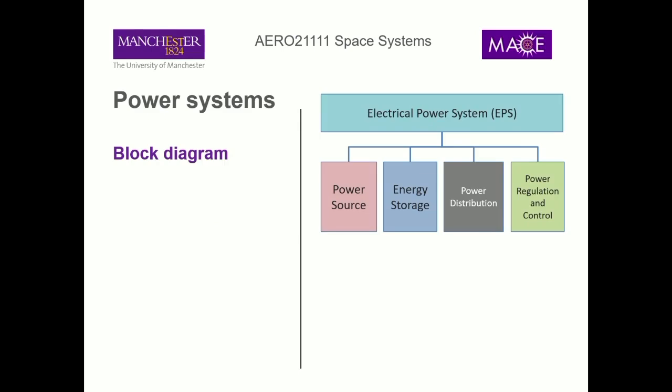This is a basic block diagram of what an electrical power system looks like. We've got four main blocks: a power source — some way to get power; some way to store that energy, because we might not always have the power we need; some way to distribute that power to all our subsystems such as propulsion, attitude determination, and communications; and some way to control that distribution.